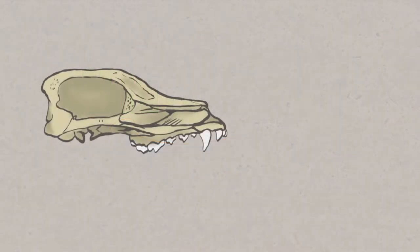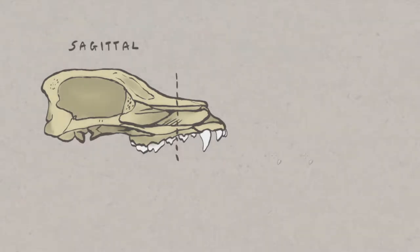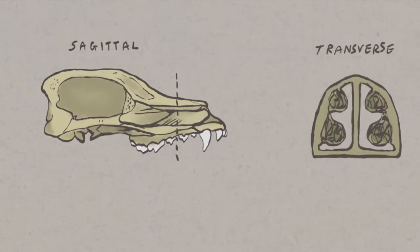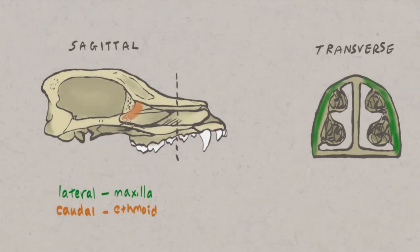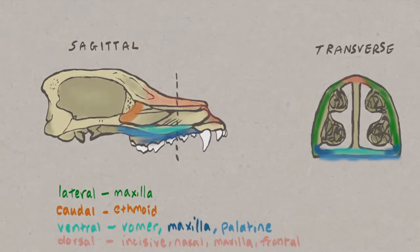The nasal chambers are located within the nasal cavity, located rostrally on the skull. Let's look at a sagittal section and a transverse section of the nasal cavity. The lateral borders of the nasal cavity are formed by the maxillae, caudally the ethmoid, ventrally the vomer, maxilla and palatine, and dorsally the incisive, nasal, maxilla and frontal bones.